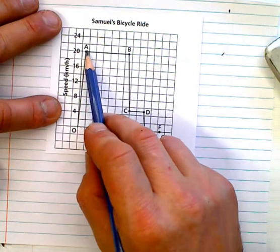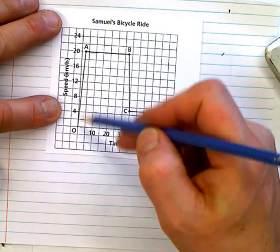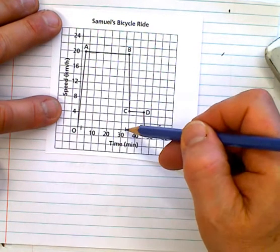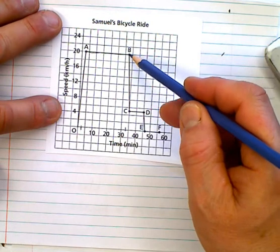And then it looks like he maintained a steady speed for how long? Well, from here to here. So, two and a half to 32 and a half. Looks like 30 minutes he rode at 20 kilometers an hour.